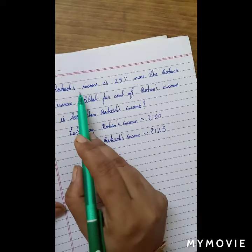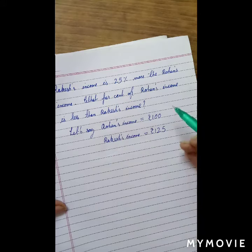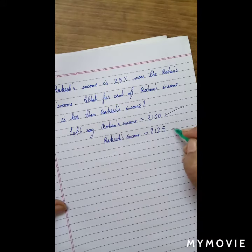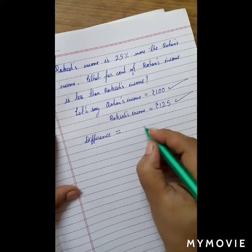Let's read the question again. Rakesh's income is 25% more than Rohan's income. So if Rohan's income is Rs.100, Rakesh's income is going to be Rs.125.